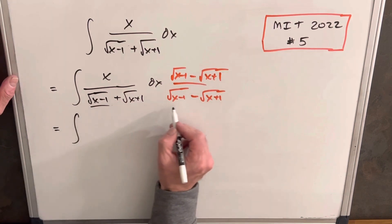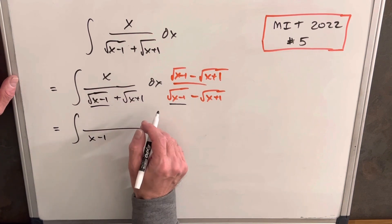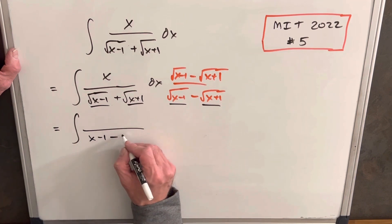And then when we do that, multiplying this by this is just going to give us an x minus 1 in the denominator. And then we'll just multiply these second terms. We're going to have minus x plus 1.